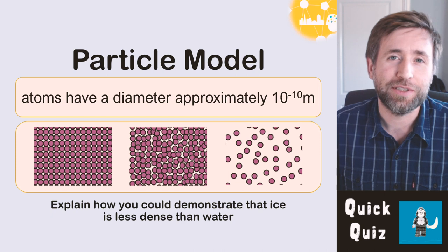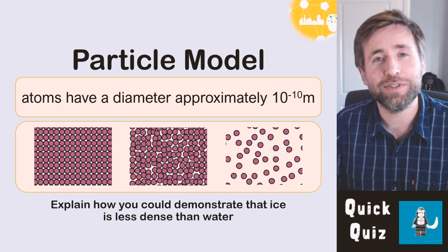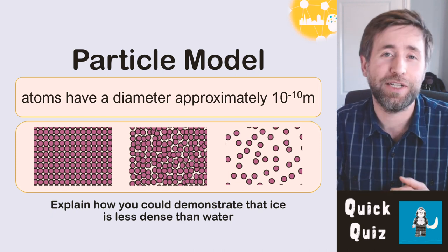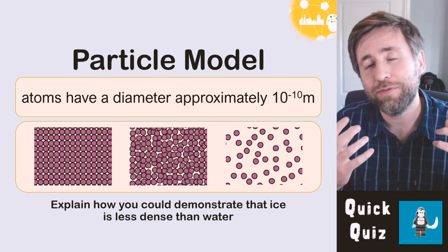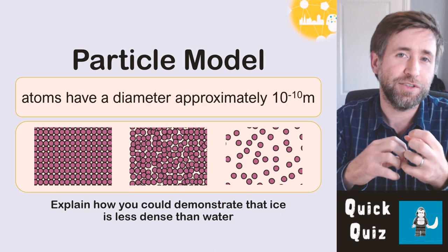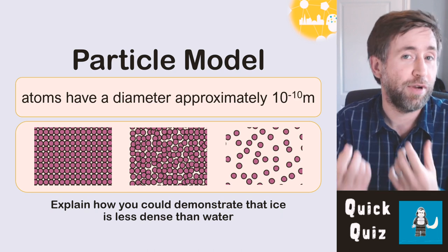When you draw a particle picture for solids, liquids and gases, it's important that the solid has a regular arrangement with the particles touching each other. A liquid, they're no further apart, they are just able to change places, so they're in a random arrangement.